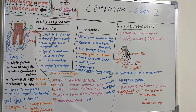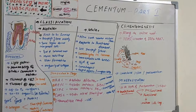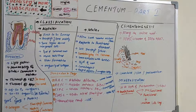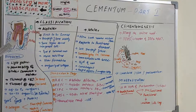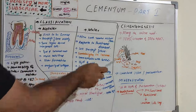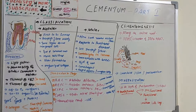Mineralization begins at the depth of the pre-cementum. Hydroxyapatite crystals are deposited first between, then within, the collagen fibrils by a process identical to bone mineralization. The width of pre-cementum is around 3 to 5 micrometers. The process of establishing appropriate conditions for crystallization and growth of crystals in cementum is extremely slow and extends over a period of several months.